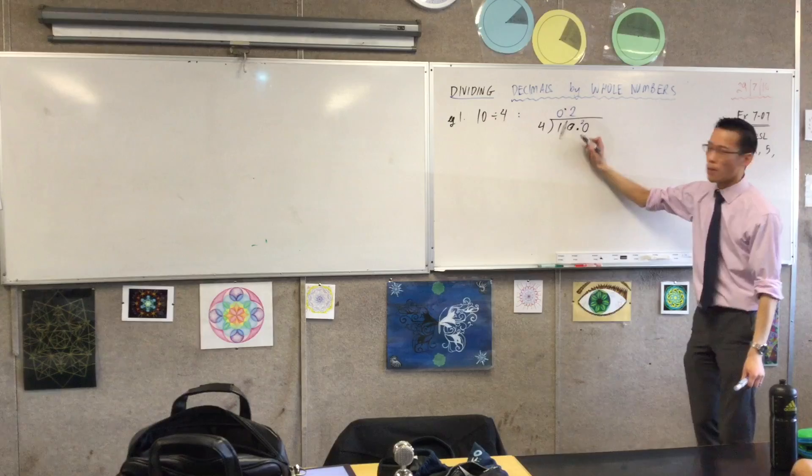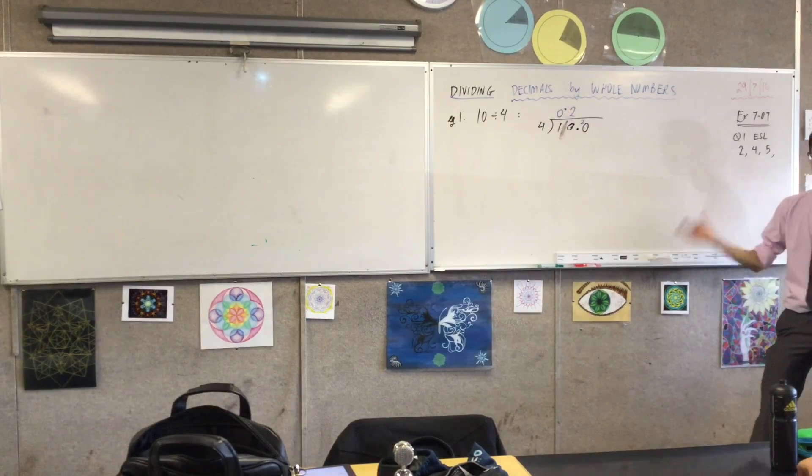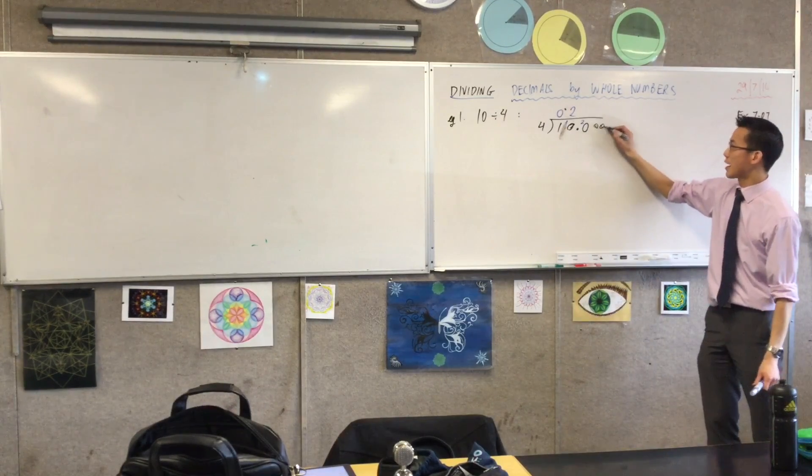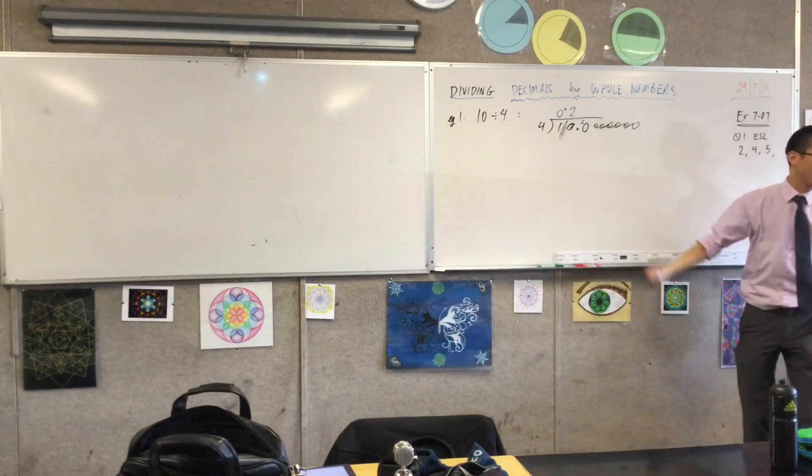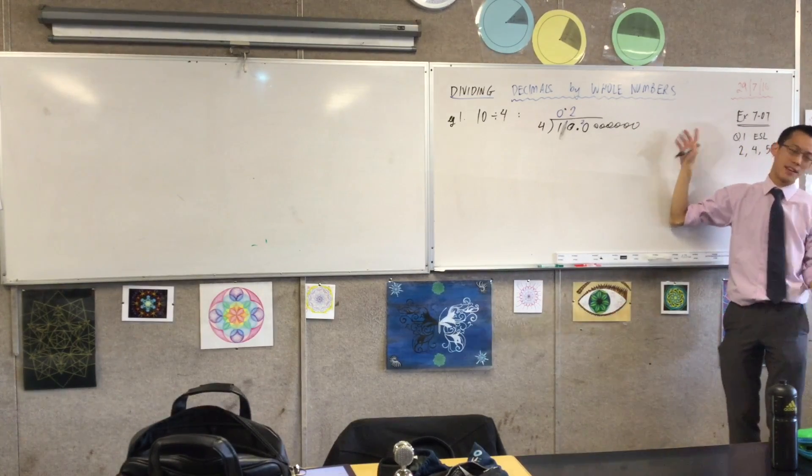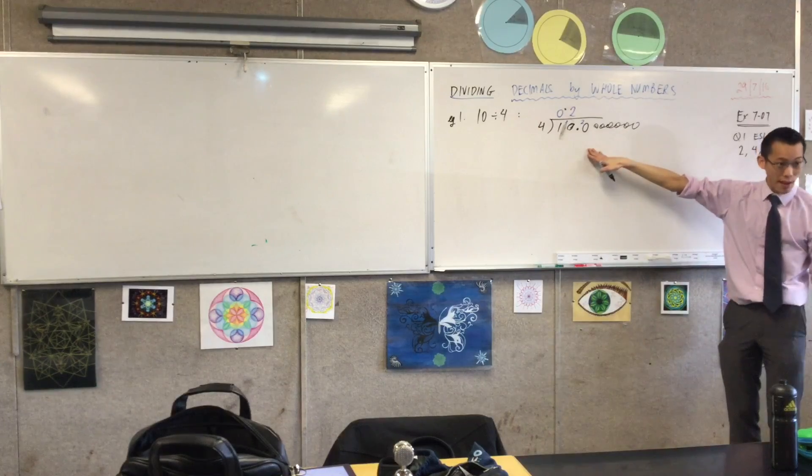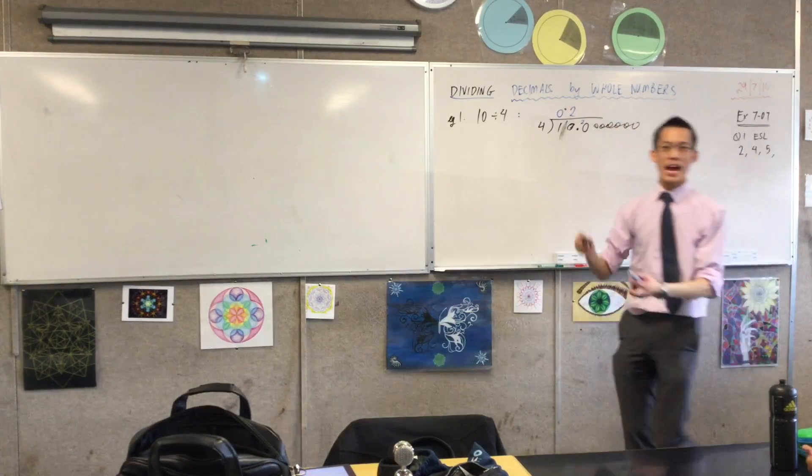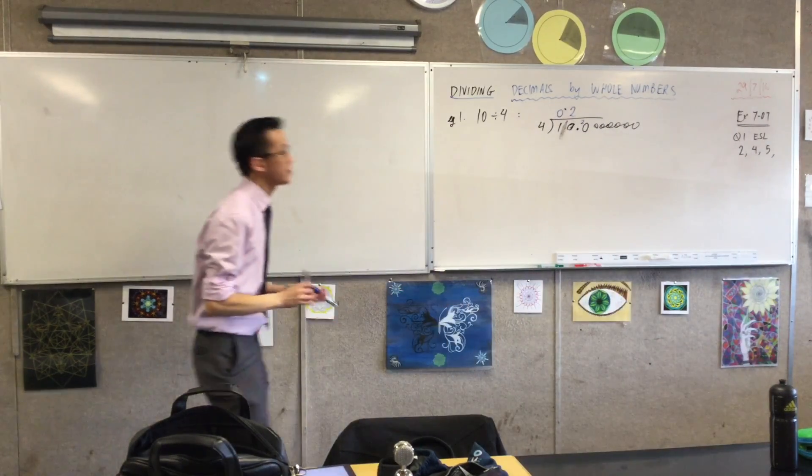So a decimal point has to come in here, right? And actually, this is okay. If I wanted to, I could add as many zeros as I like here, because that just tells me, what small bits are trailing along this 10? And the answer is none. So that's okay. Now I have a look again, and I see if I can finish this thing off.